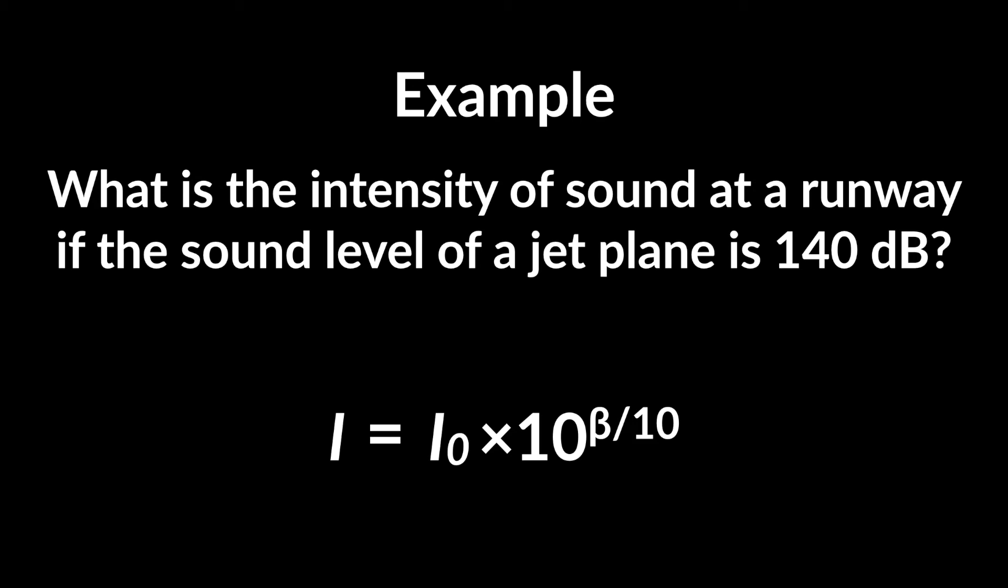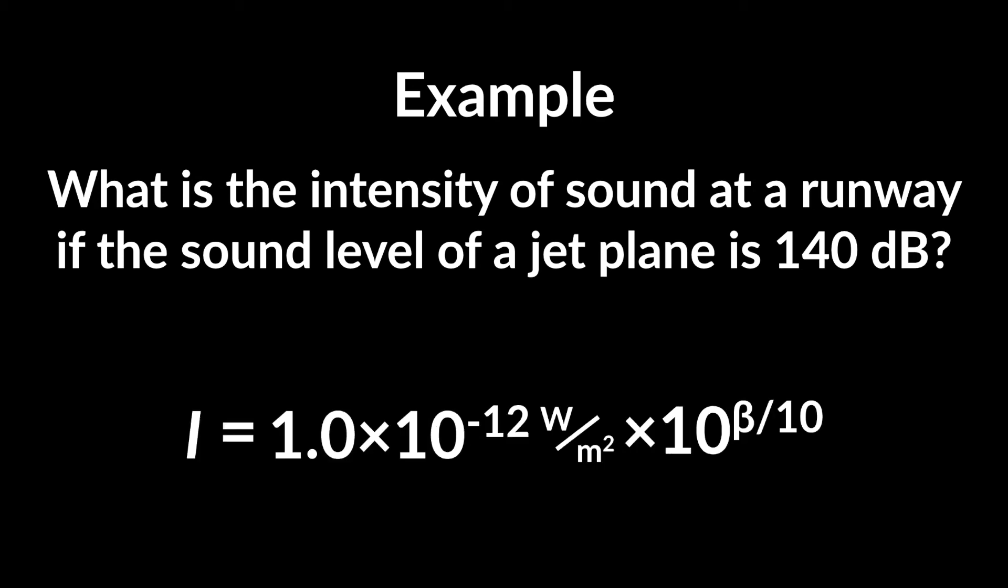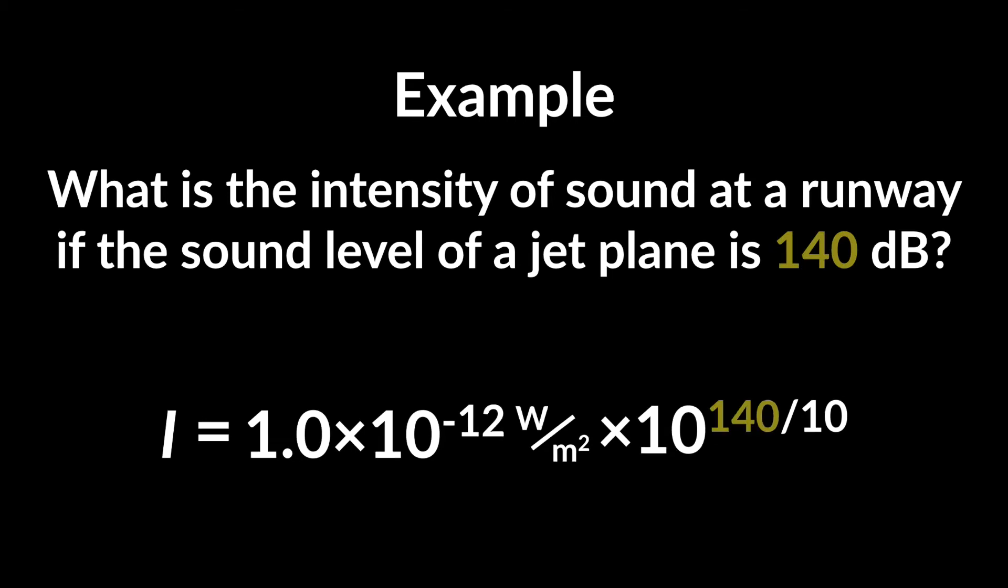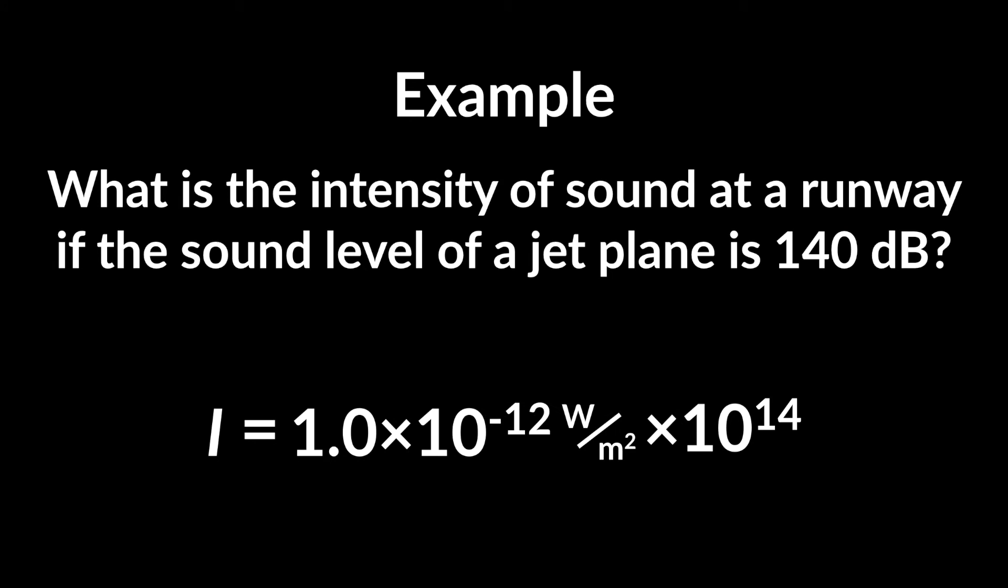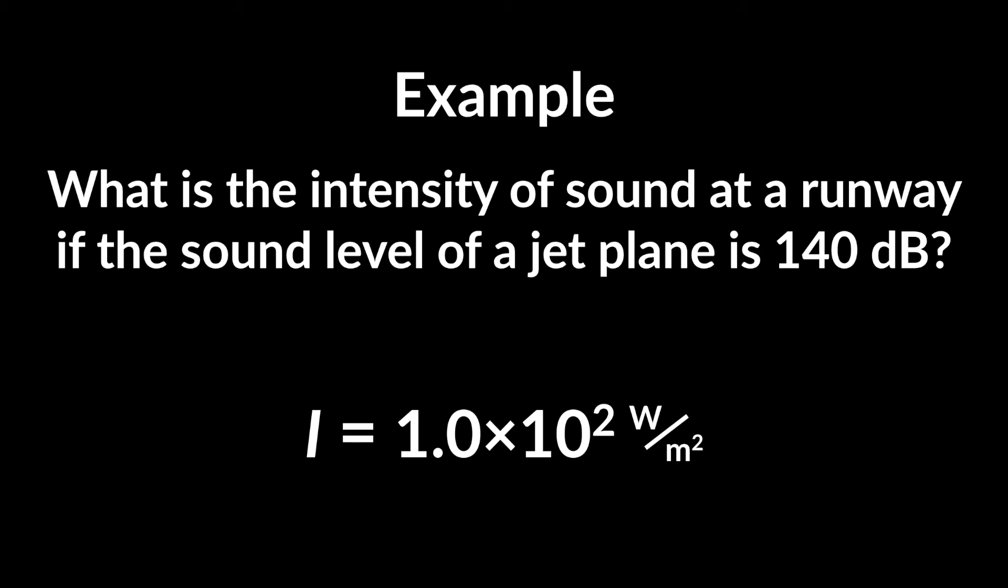Now we can just plug things in. We have I₀, which is 1.0 times 10 to the minus 12 watts per meter squared, and beta is 140, as given by the problem. 140 over 10 is 14, and now we can do this in our heads, or we can use a calculator to get that the intensity is 1.0 times 10 to the second watts per meter squared, also known as 100 watts per meter squared. That's pretty straightforward.